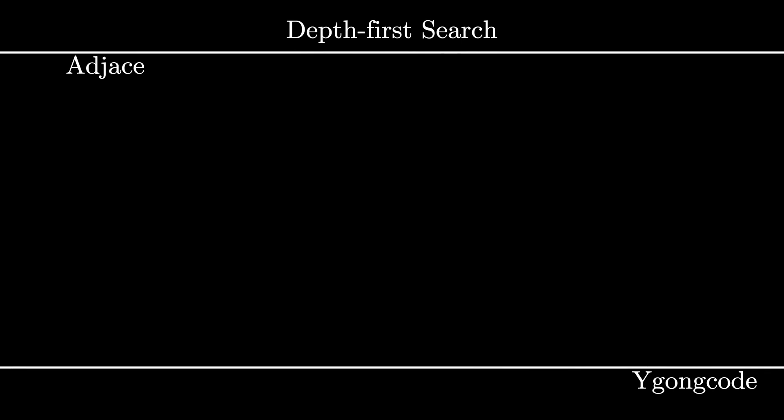Today we will visualize depth first search on an undirected graph. Now what is a graph? A graph is just a series of nodes connected by an edge. The edges could be directed or undirected.